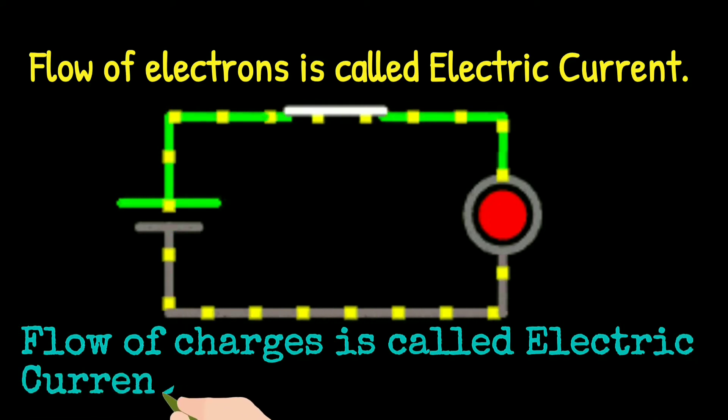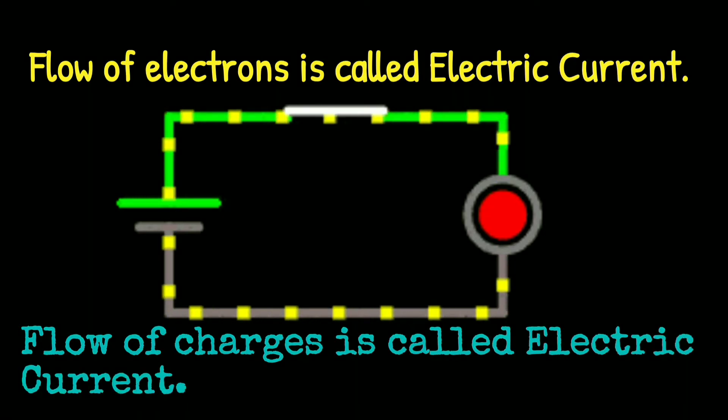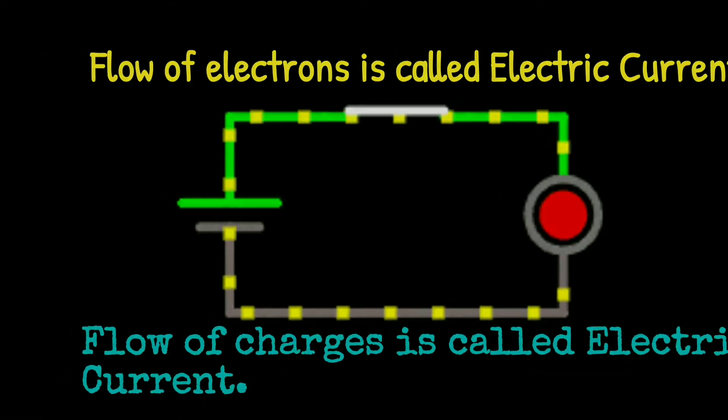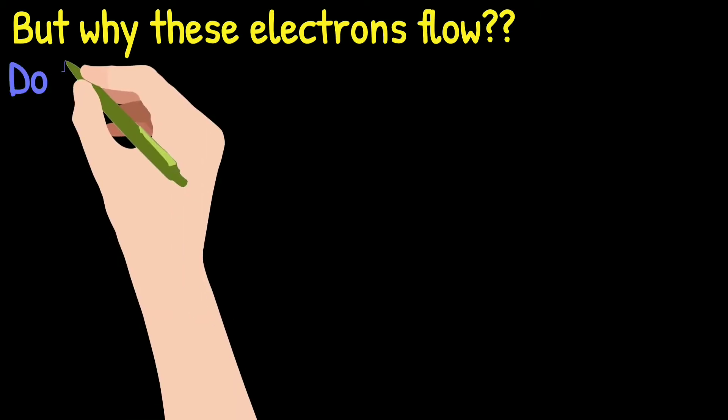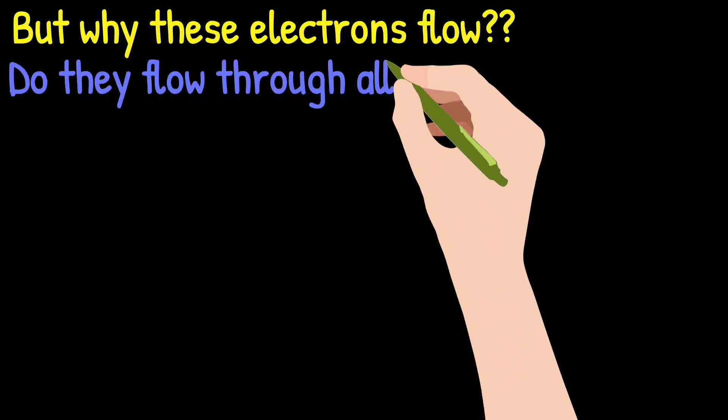But why do these electrons flow? Do they flow through all types of materials?